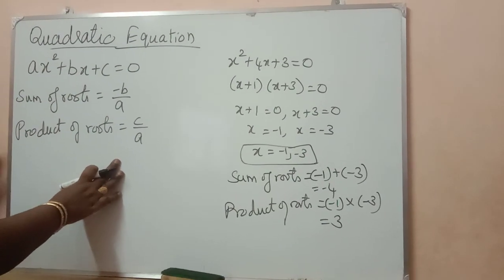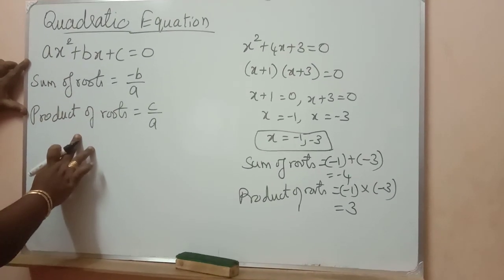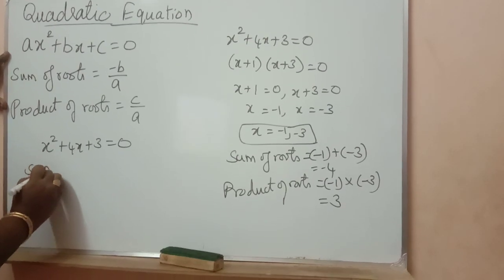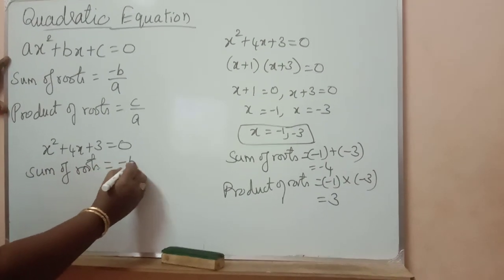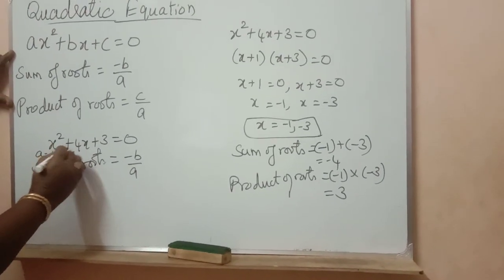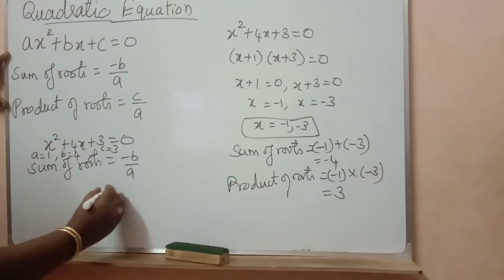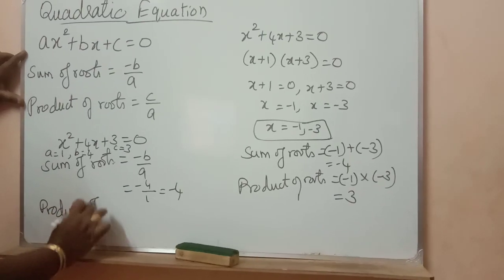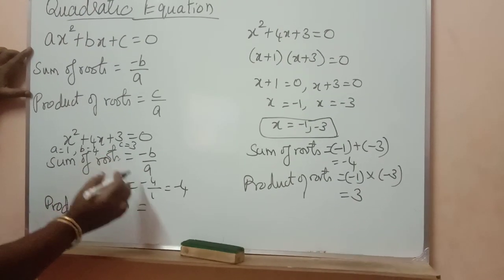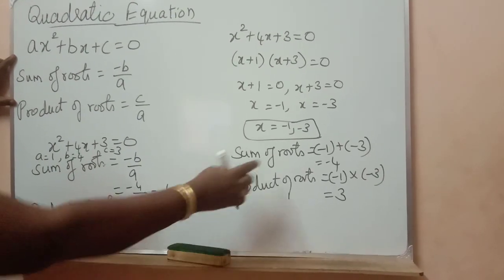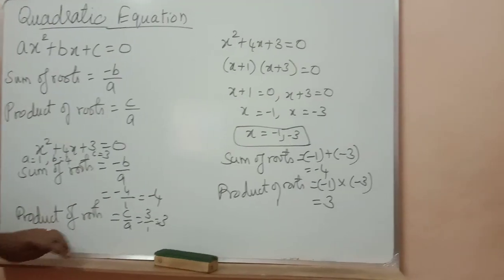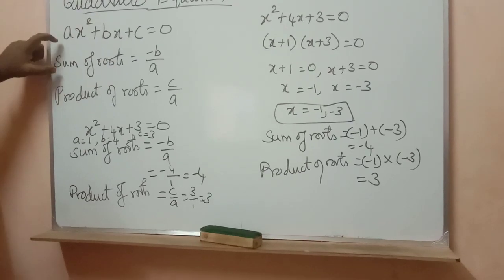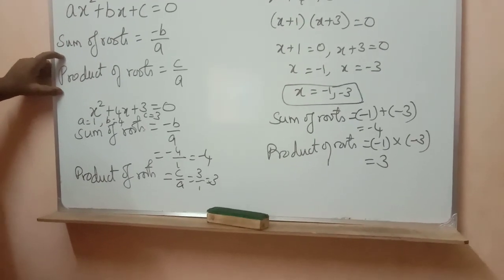Write these formulas — we are going to use them up to the 12th standard. Sum of roots is minus b by a; product of roots is c by a. For example, for x squared plus 4x plus 3 equal to 0: coefficient of x squared is 1, that is a; coefficient of x is 4, that is b; constant is 3, that is c. So sum of roots equals minus 4 by 1, which is minus 4. Product of roots equals 3 by 1, which is 3. Using the formula method we get minus 4 and 3, and using factorization method we also find the same roots.